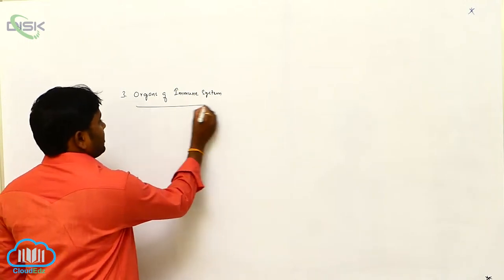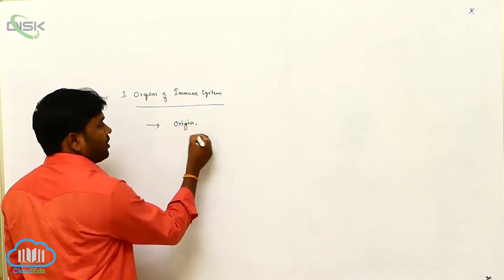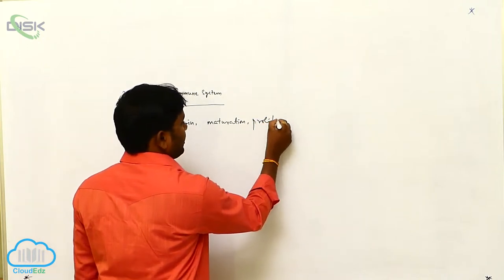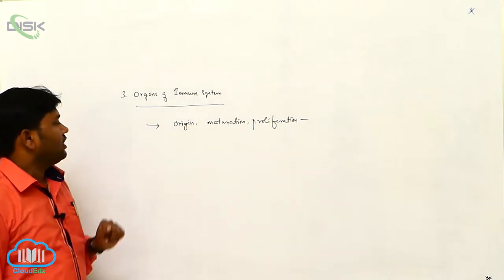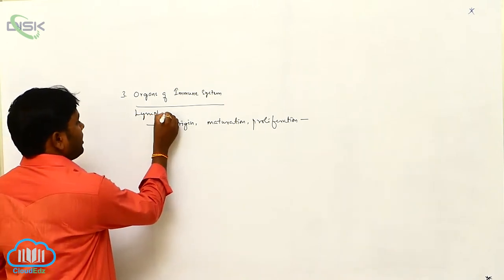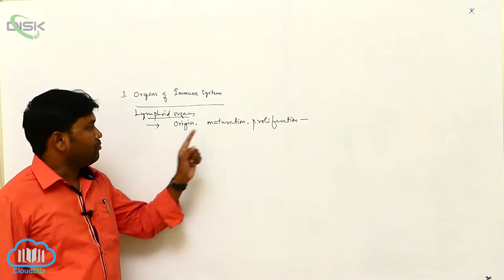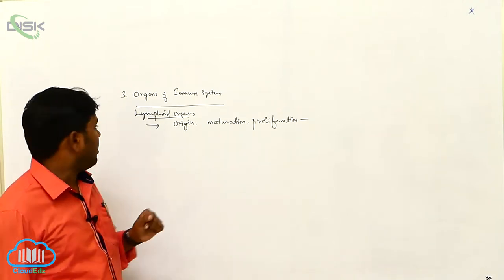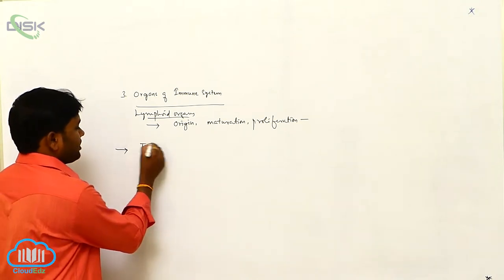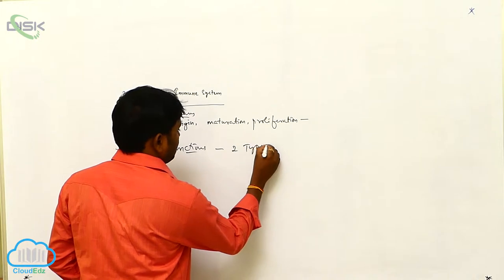Organs of the immune system: the organs involved in the origin, maturation, and proliferation of lymphocytes are called lymphoid organs. Based on their function, the lymphoid organs are of two types.